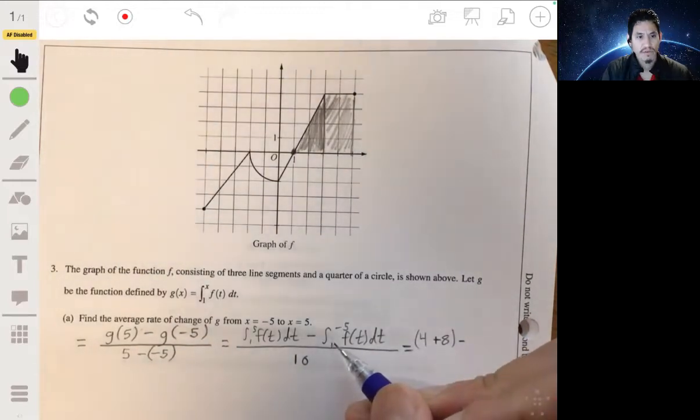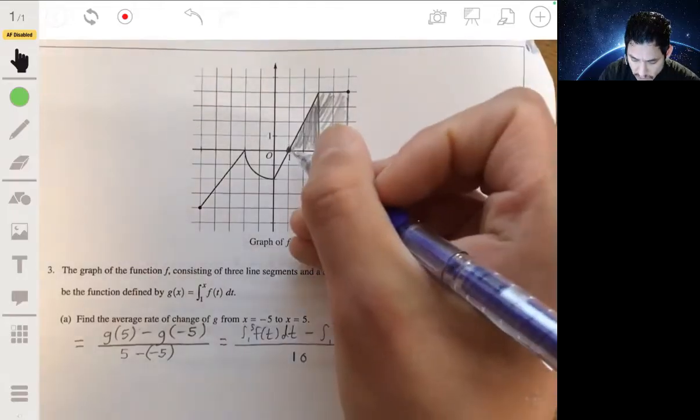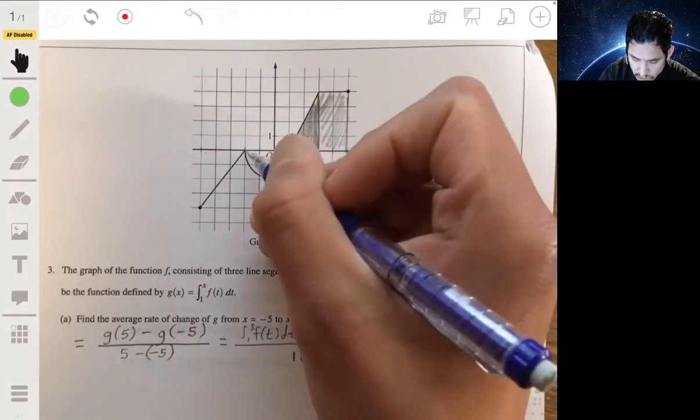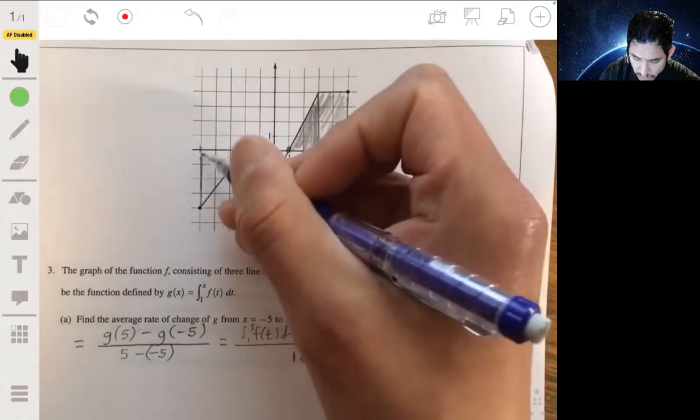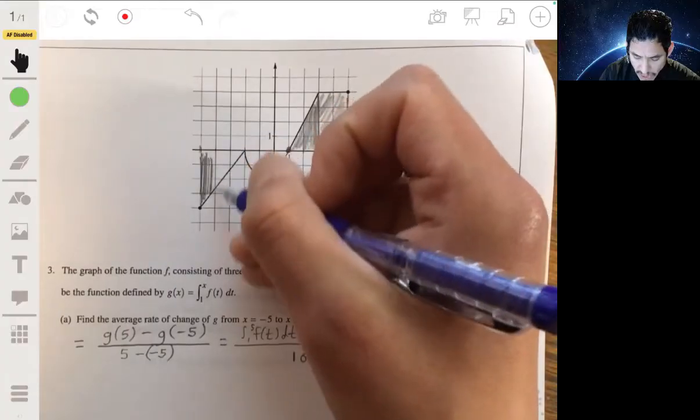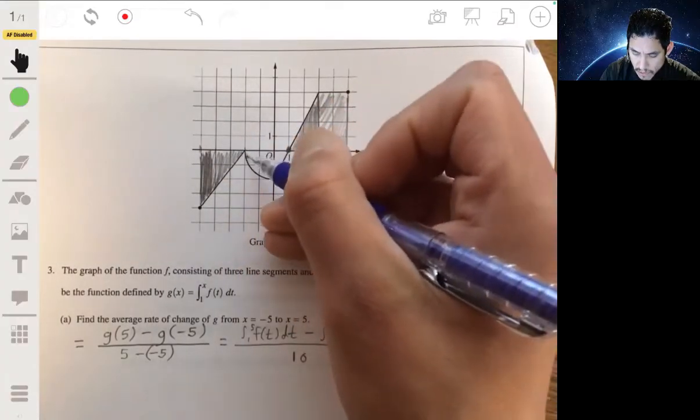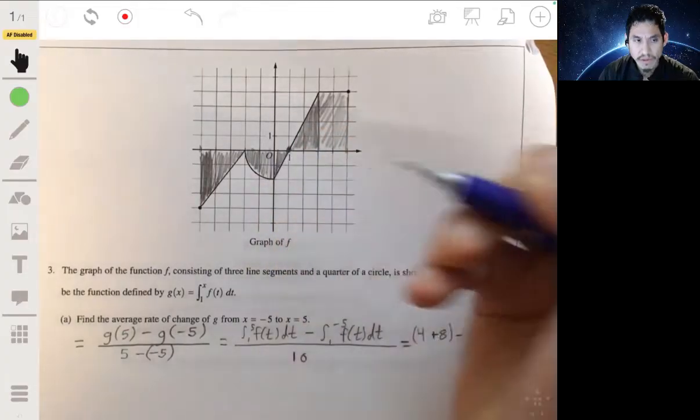Well, let's actually focus on that first. So 4 plus the area of this rectangle. So 2 times 4. So 4 plus 8. This minus the integral from 1 to negative 5. And 1 to negative 5 just going backwards. So from here to negative 1, 2, 3, 4, 5. Here to here.